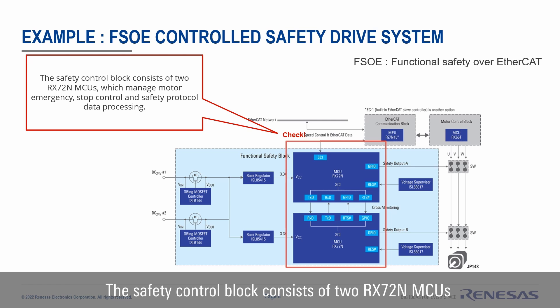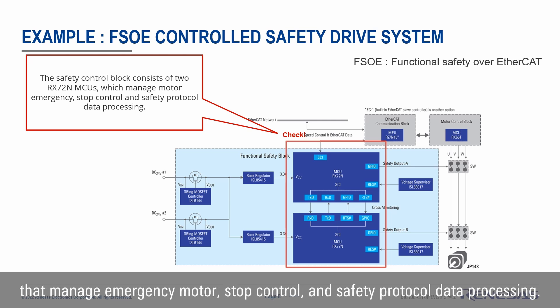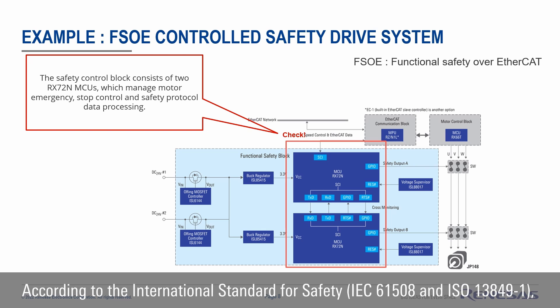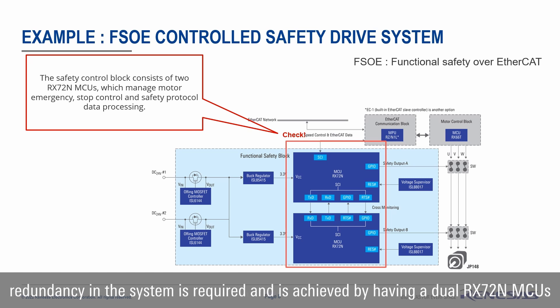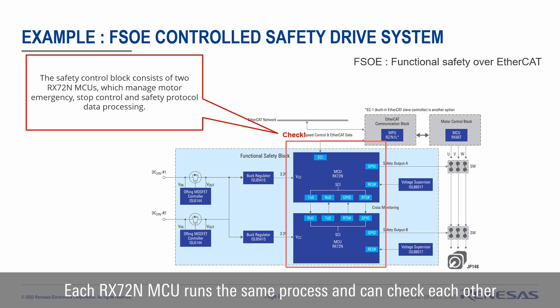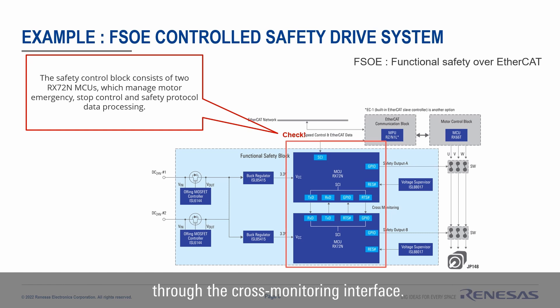The safety control blocks consist of two RX72M 32-bit MCUs managing emergency motor control and safety protocol data processing. According to international standards IEC 61508 and ISO 13849-1, redundancy in the system is required and is achieved by having a dual RX72M 32-bit configuration. Each RX72M 32-bit runs the same process and can check each other through a cross-monitoring interface.